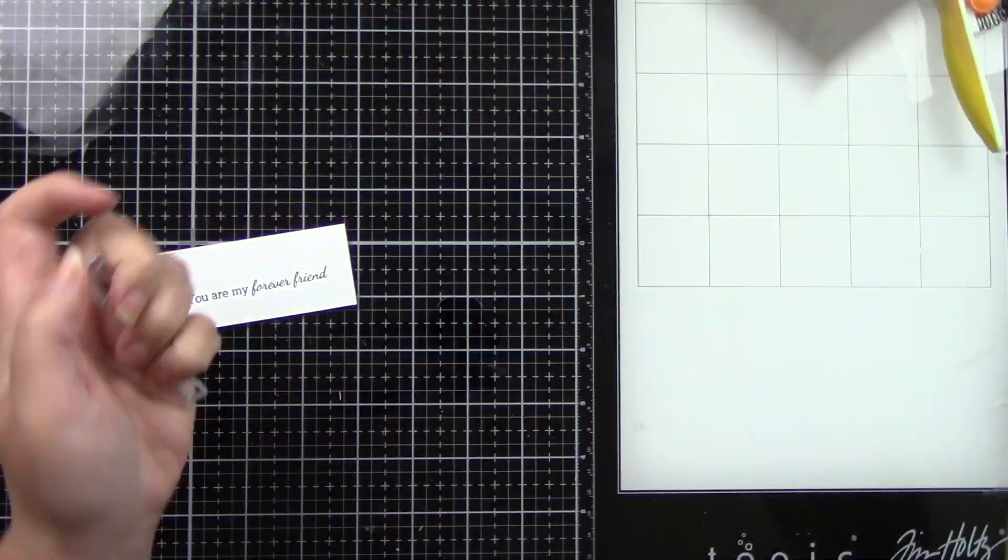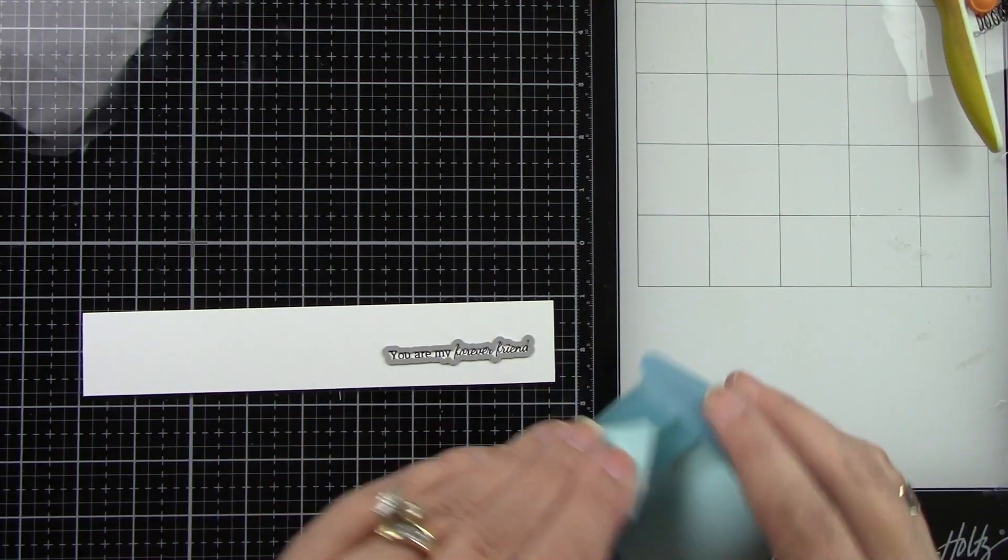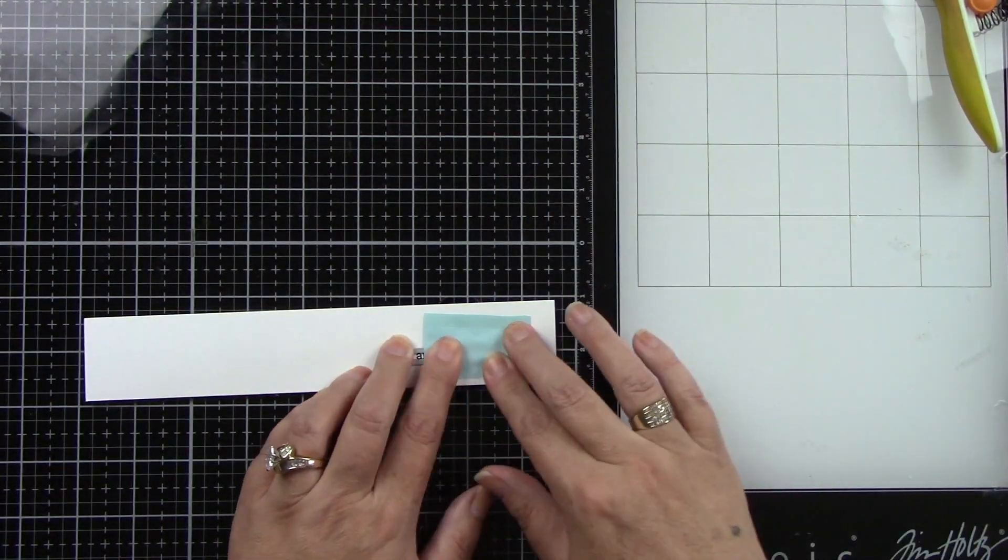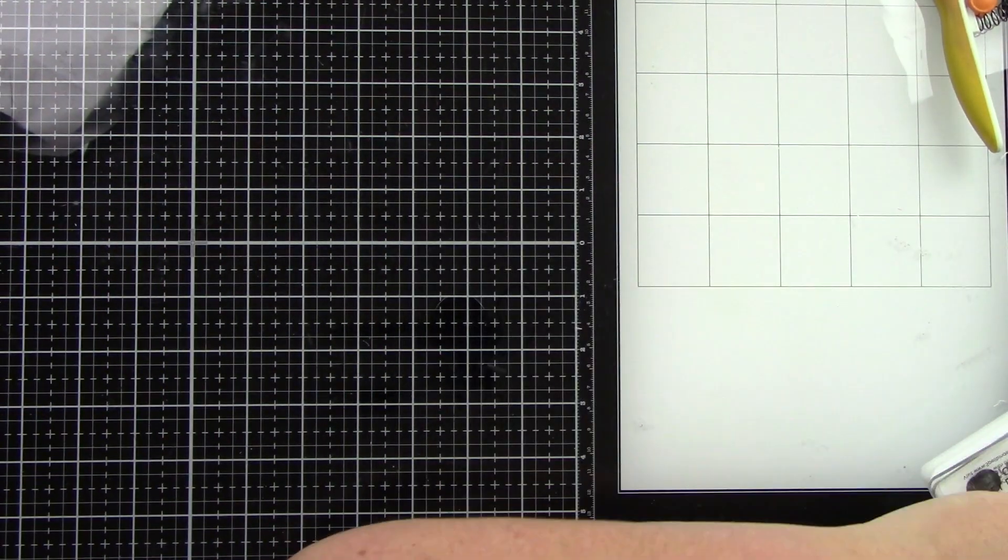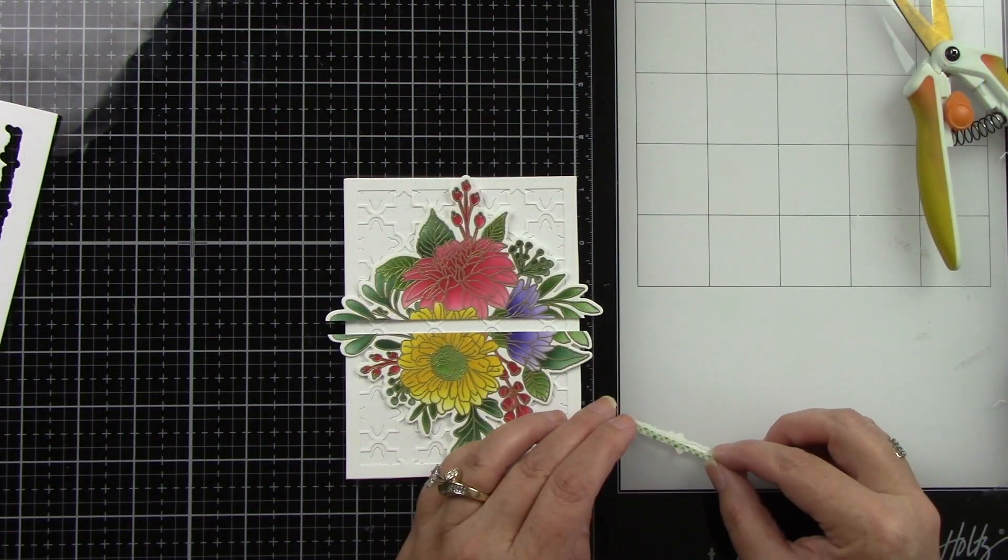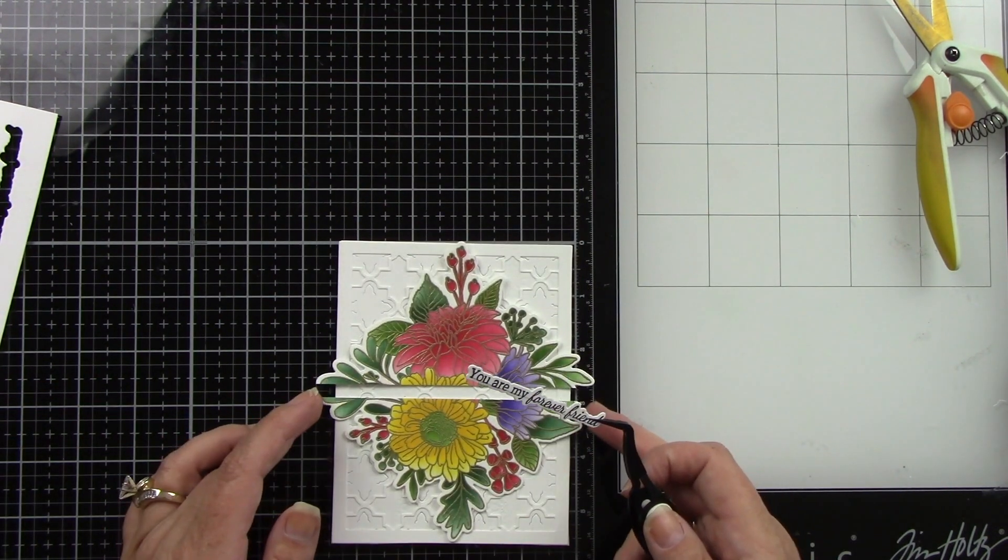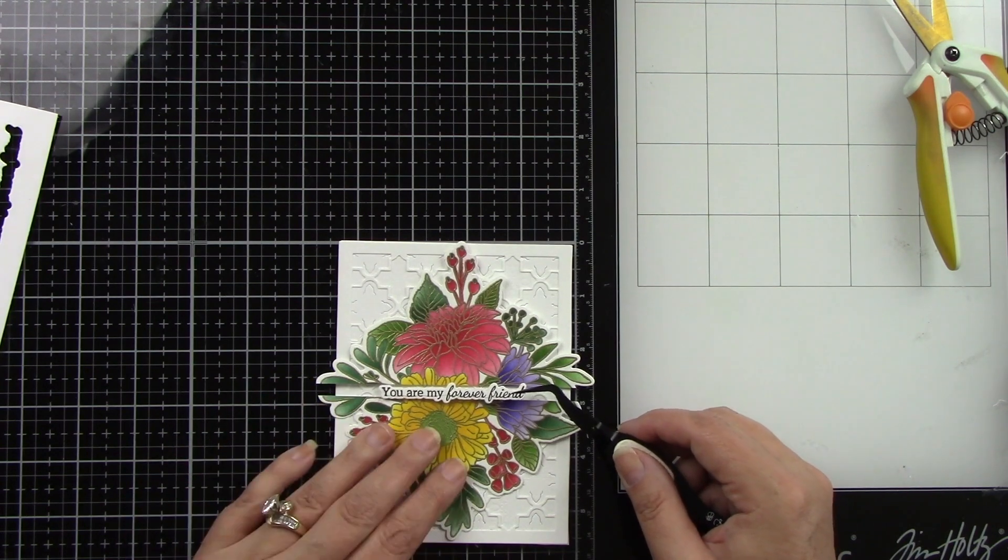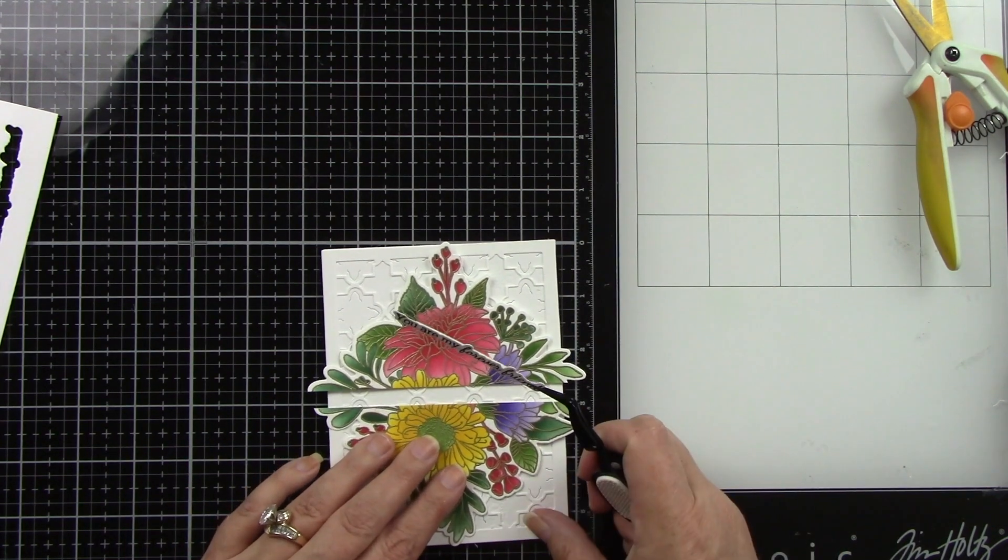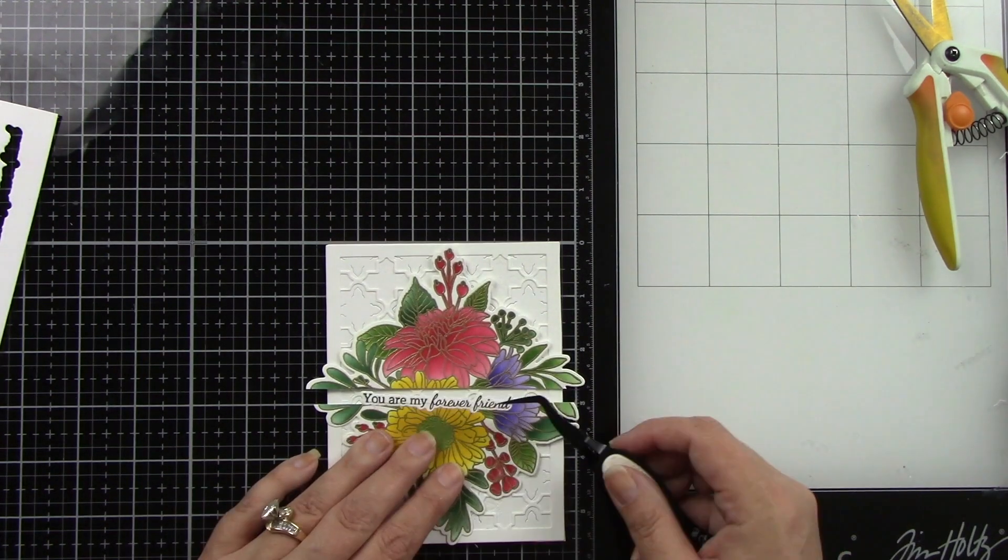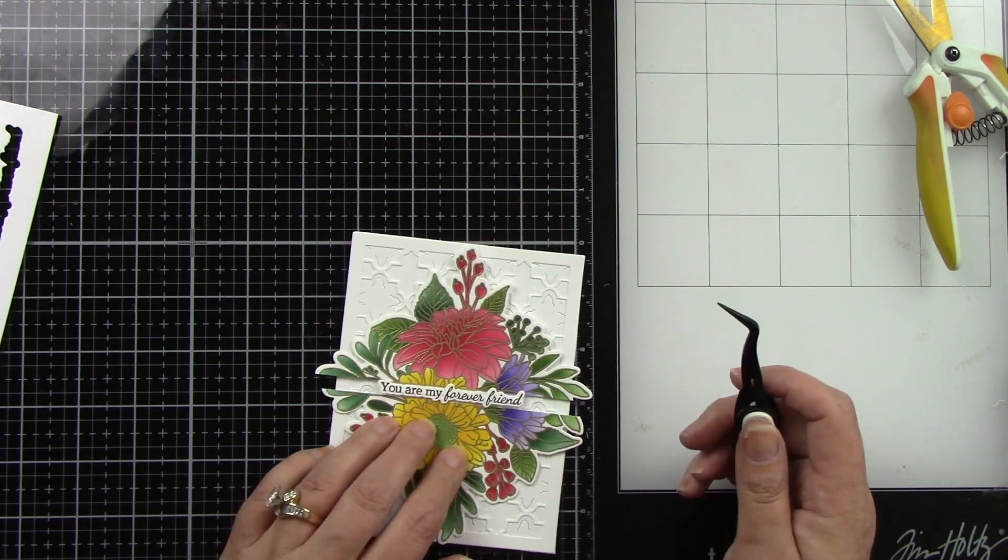I'm going to use that coordinating die to die cut that out. I love that Honeybee Stamps has coordinating sentiment dies. It is fantastic, but if you don't have something like that, you can just trim it out with your paper trimmer. I'm going to add some foam tape behind that and pop that in the center before I adhere down these floral images. I'm just going to make sure they're even on the top and the bottom for the card panel, then pop that right in the center.